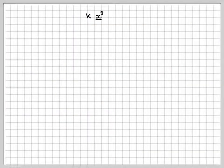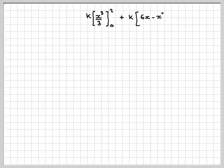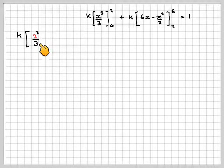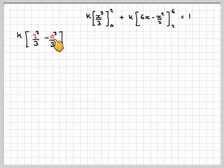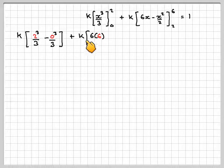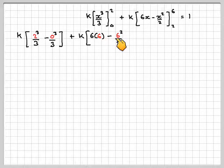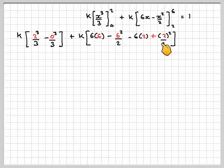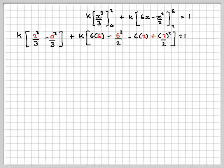So solving that, now substituting in the limits, so we get k(2³/3 minus 0³/3), don't always assume if you put 0 in it will be 0, even though it is in this case. Plus k[6 times 6 minus 6²/2 minus 6 times 2], and that's what you must be careful because it's minus minus, so it's going to be plus 2²/2, is equal to 1.